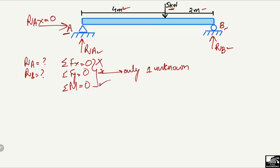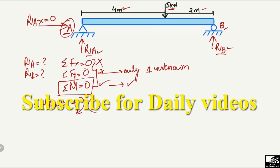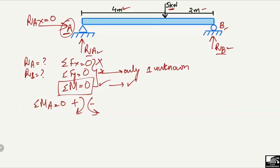Since we have two unknowns, RA and RB, we will use the moment equation. We take the summation of moments at point A equal to zero. We assume clockwise moments are positive and counterclockwise moments are negative. The first load that creates a moment is the 5 kN acting downward, which acts in the clockwise direction about point A, so it is taken as positive.